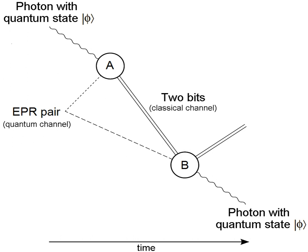An intermediary step which allows the testing of communication infrastructure are trusted repeaters. Importantly, a trusted repeater cannot be used to transmit qubits over long distances. Instead, a trusted repeater can only be used to perform quantum key distribution with the additional assumption that the repeater is trusted. Consider two end nodes A and B, and a trusted repeater R in the middle. A and R perform quantum key distribution to generate a key K_AR.